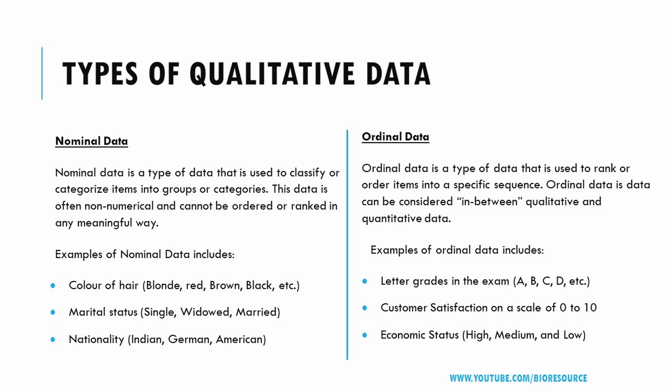Ordinal data is used for observations like customer satisfaction or happiness, but we cannot perform arithmetical tasks on them. Ordinal data is qualitative data whose values have some relative position, and can be considered in between qualitative and quantitative.